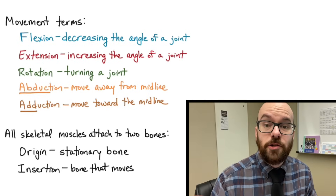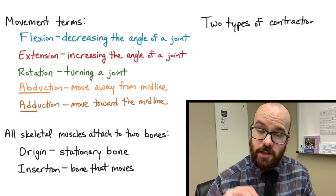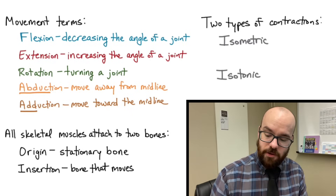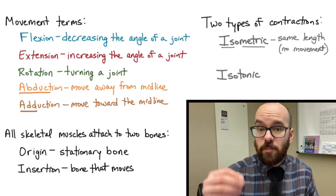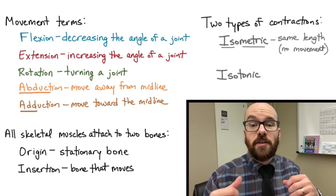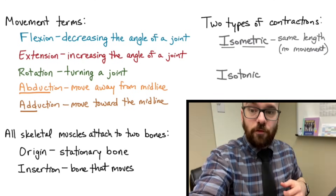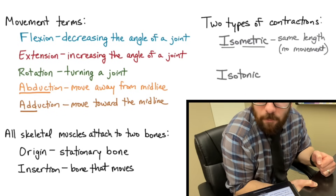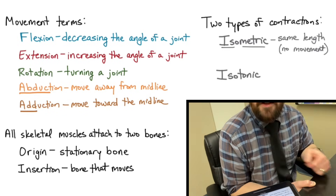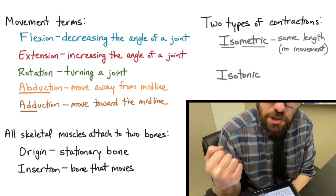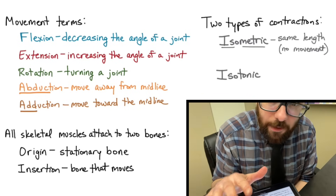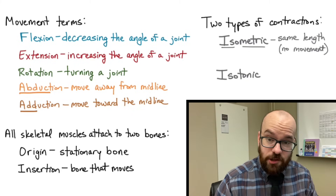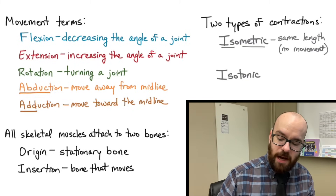There are two types of contractions: isometric and isotonic. The prefix 'iso' means same. Isometric means same length — this is when you contract a muscle but no movement happens. For example, if you try to lift up a desk, the muscle is contracting but nothing moves. That's an isometric contraction — straining hard but no movement, so same length.